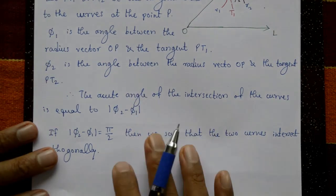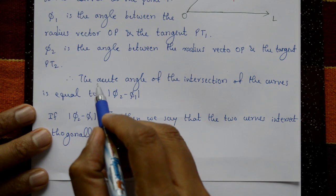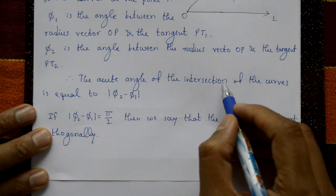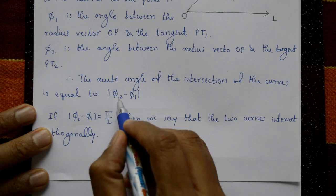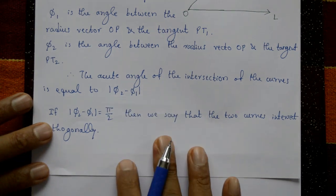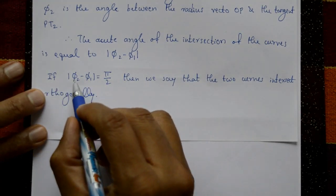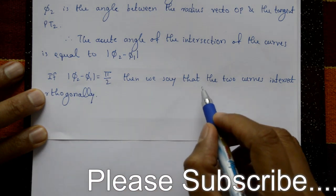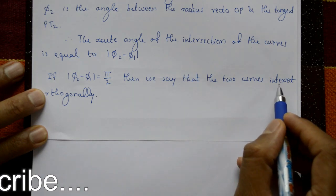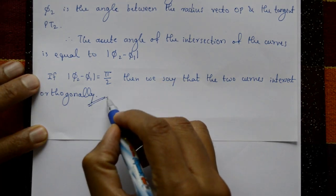Therefore, the acute angle of intersection of the curves is equal to |φ2 - φ1|. If |φ2 - φ1| = 90° or π/2, then we say that the two curves intersect orthogonally.